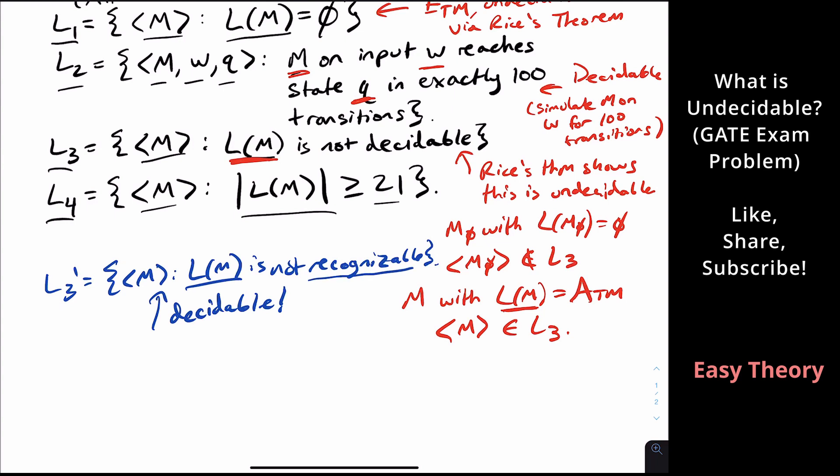But look at what it says here. It is not recognizable. So the languages of all Turing machines, if you take all languages of all Turing machines, those are the recognizable languages. So if you're asking me to produce a Turing machine whose language is not recognizable, you're asking me to produce a Turing machine which has a language that can't be recognized by any Turing machine, which is impossible.